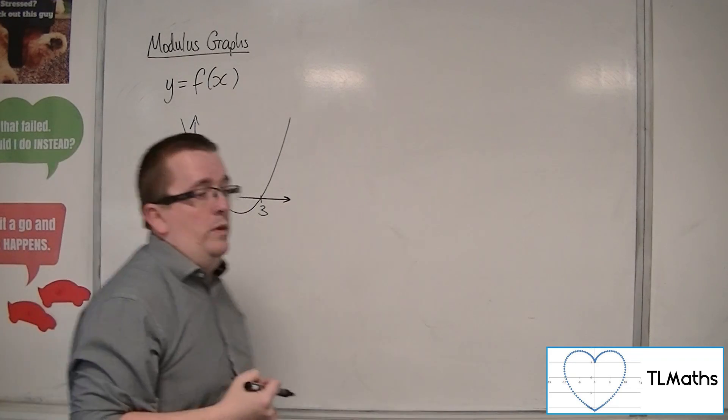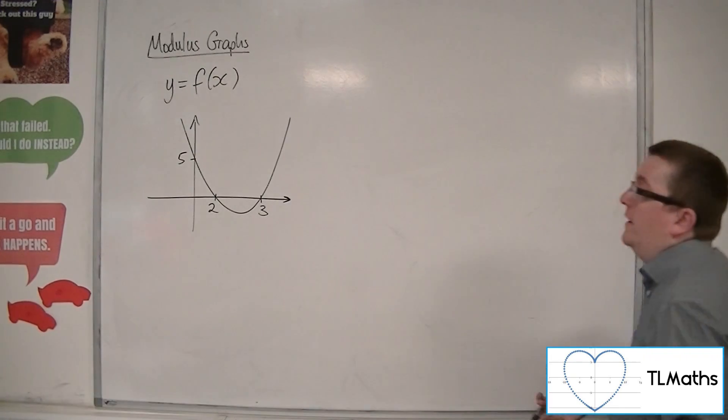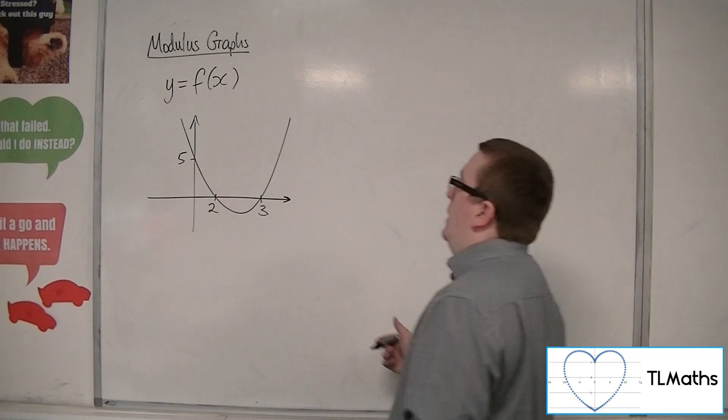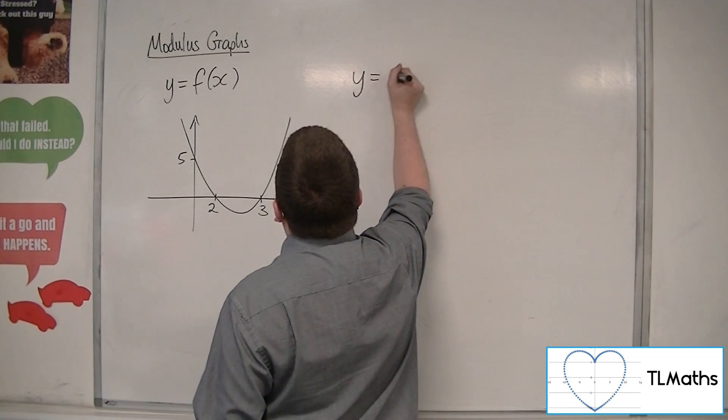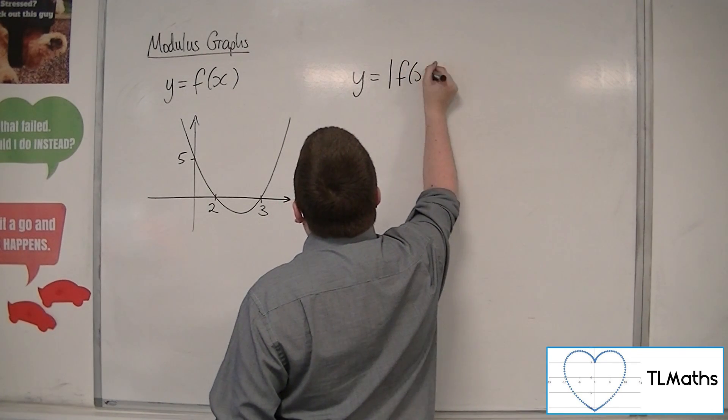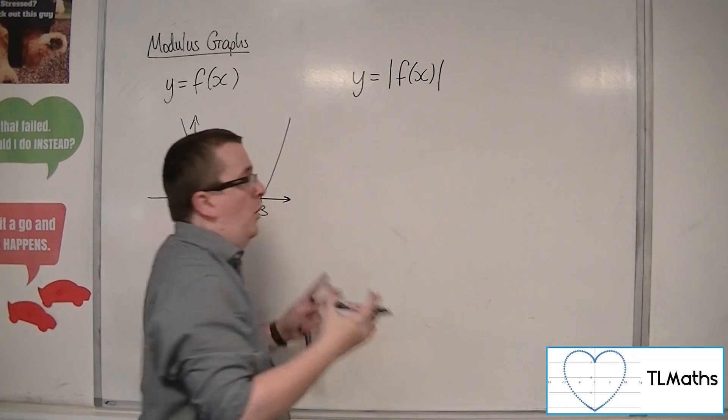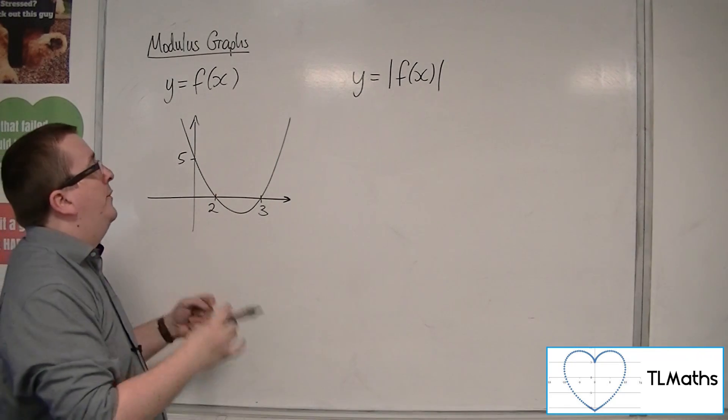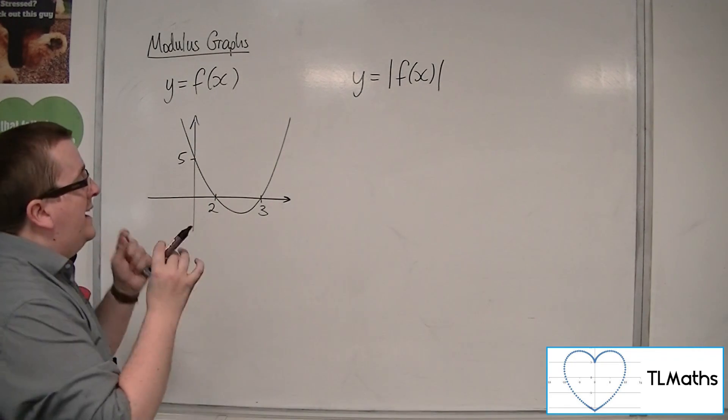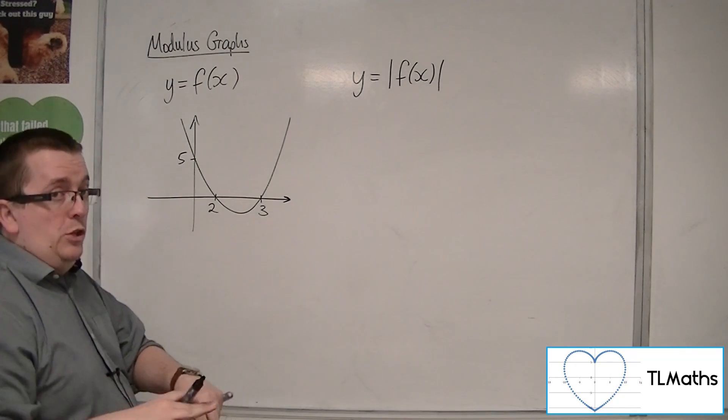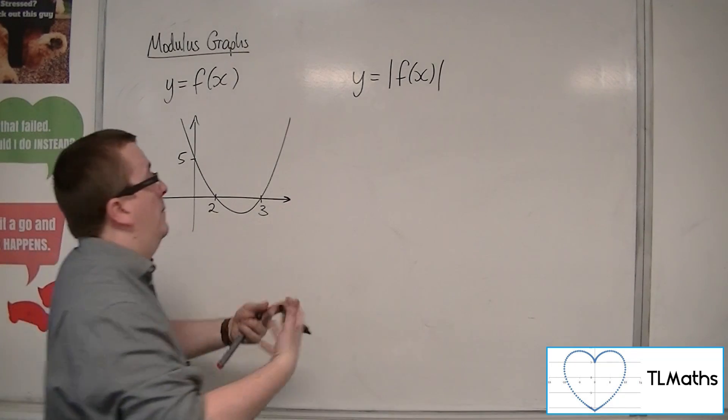So we'll work with that. It's kind of like a quadratic parabola. Now if I put a modular sign around the whole function, then I know that this function cannot be negative. It cannot go below the x-axis, and anything that has gone below the x-axis gets reflected up.